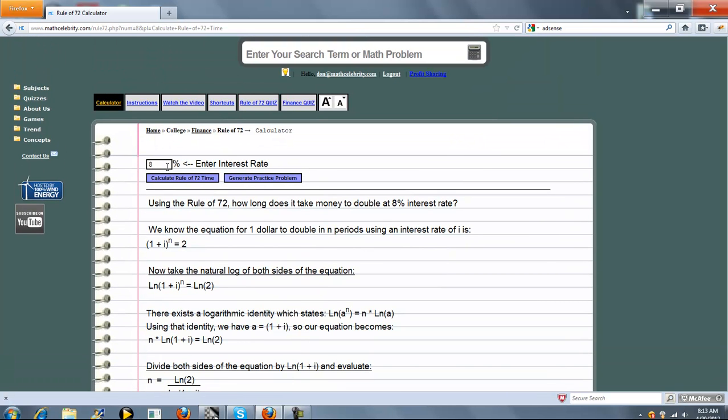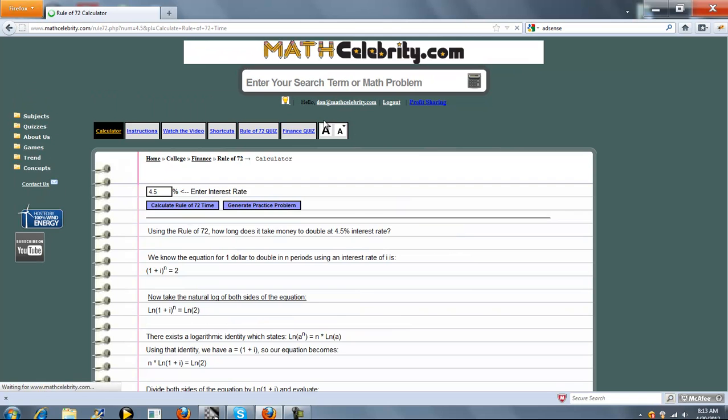Let's go ahead and run one more interest rate. This time we'll say 4.5, and press 'Calculate Rule of 72 time.'